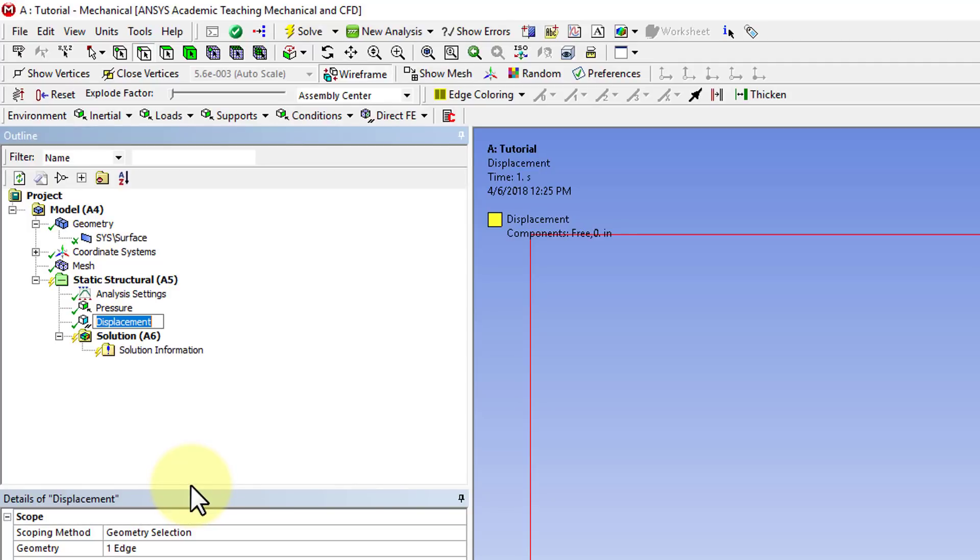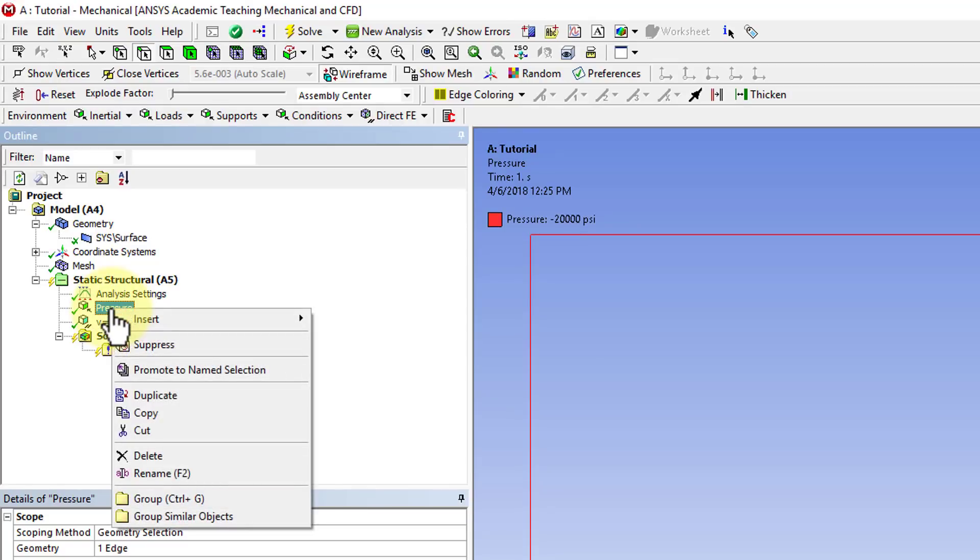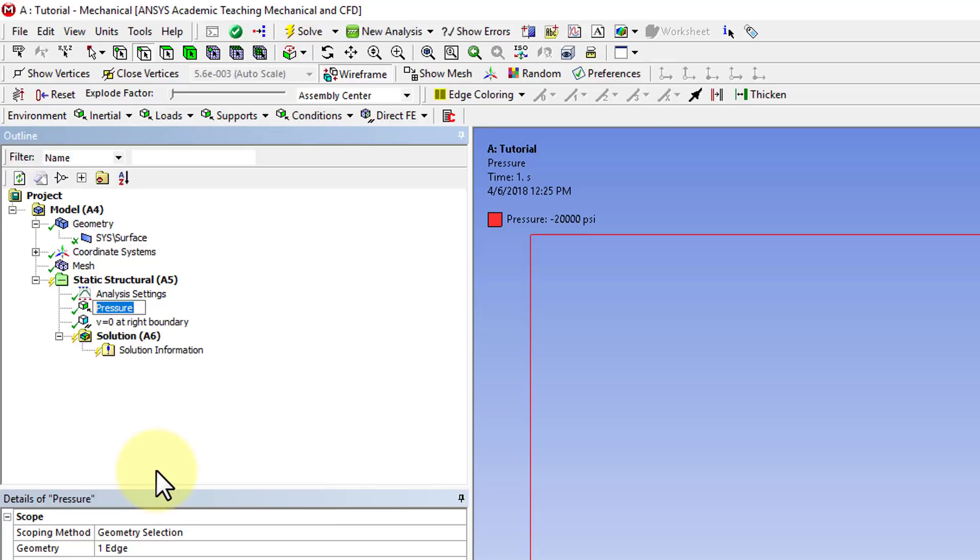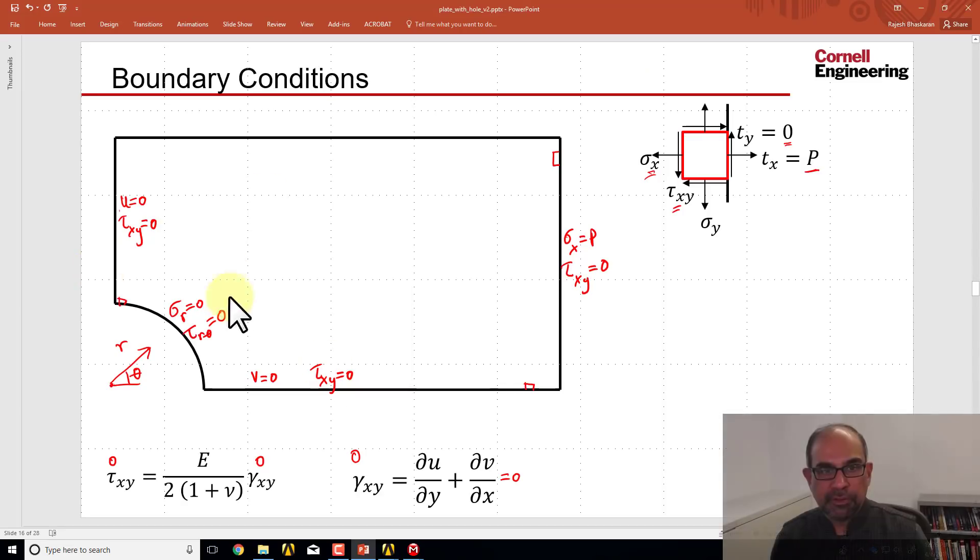And we have to interpret that as v equal to 0 at the bottom boundary. So I'll right-click, and I'll say rename v equal to 0 at the right boundary. That way, that's how we need to think about it. And in fact, let me go and rename this too. I'll say right-click, rename, I'll say normal traction at right boundary. I'll say enter.